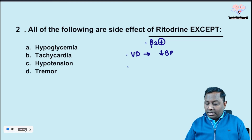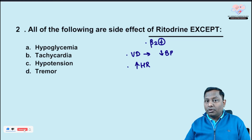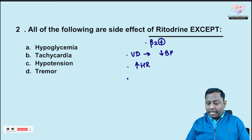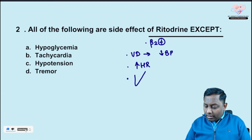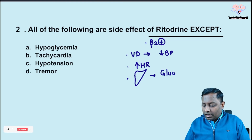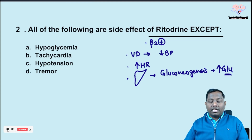At high dosage, ritodrine can also stimulate beta-1 receptors and directly increase the heart rate. Beta-2 receptors also act in the liver, causing gluconeogenesis and glycogenolysis.